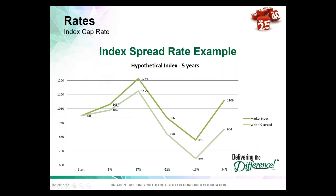Here's an example with a 4% spread. If the index goes up 8%, the client gets 8 minus the 4% spread, which is a positive 4%. If the index goes up 17%, they get 17 minus 4, which is 13%. On the downside, same thing — minus 4. Then in a huge rebound year of 34%, with a spread index the client could get 34 minus 4, a positive 30% index credit. That large upside participation makes spread a compelling index selection.